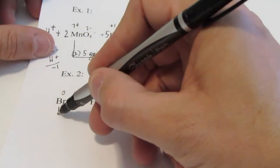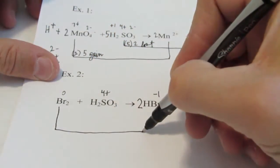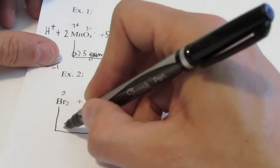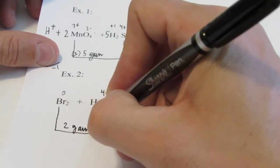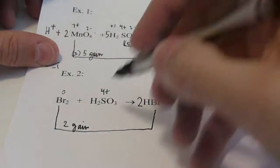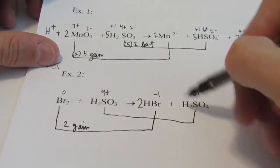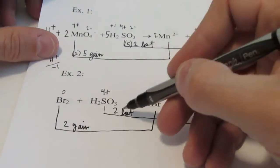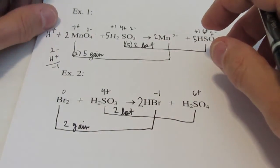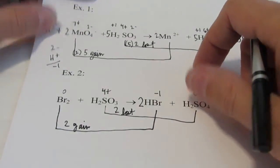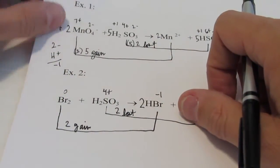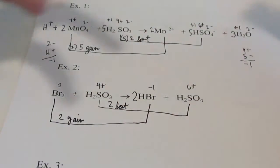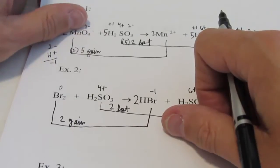Step two: balance electrons gained with lost. Bromine goes from zero to −1 — each one gained one, but there are two, so two electrons were gained. Sulfur goes from 4⁺ to 6⁺ — two electrons were lost. Two gained, two lost — electrons gained and lost are balanced. Step two is finished. Step three we get to skip here because I don't have any ions on either side of the equation, so I don't need to balance the ionic charge. Step three is done.